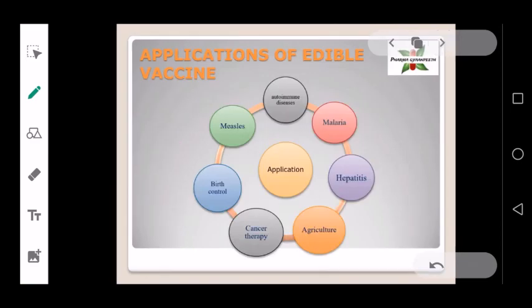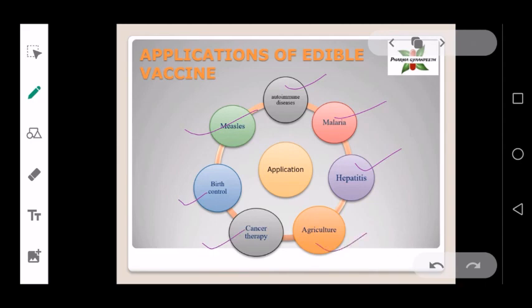The applications of edible vaccines include autoimmune diseases and other diseases like malaria, hepatitis, and measles. Beyond disease treatment, they are also used in birth control, cancer therapy, agriculture, and biotechnology.